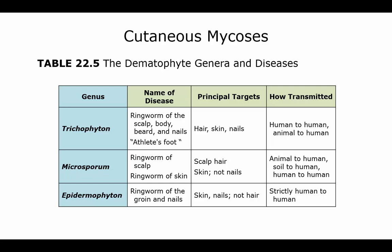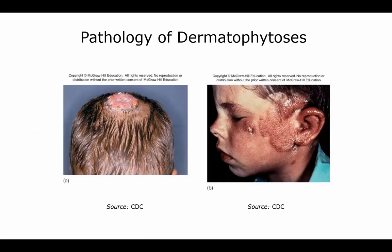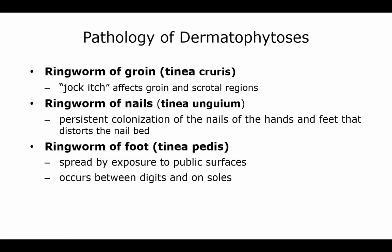Looking at a table of the different types, ringworm or athlete's foot can affect your hair, skin, or nails. In the scalp it's called tinea capitis and hair can be lost. On the body it's tinea corporis, producing inflamed red ring lesions — which is why it's called ringworm, even though it's a fungus, not a worm. In the groin, which we call jock itch, it's tinea cruris. If it distorts the nail bed of hands and feet it's tinea unguium.